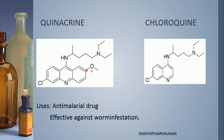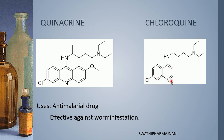In quinacrine, a chloro group is present on the acridine ring, along with a methoxy group and an isopentyl side chain (NHCHCH₃CH₂CH₂CH₂). This isopentyl group is attached to an amino group to which two ethyl groups are present — that is the complete structure of quinacrine. In chloroquine, the acridine basic nucleus is not present.